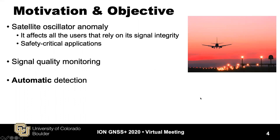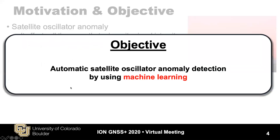The motivation for detecting Satellite Oscillator Anomaly is that it affects all users that rely on its signal integrity, especially for safety-critical applications like aviation. So it is important to monitor signal quality, where automatic detection is desired. The objective here is to conduct automatic satellite oscillator anomaly detection using machine learning.